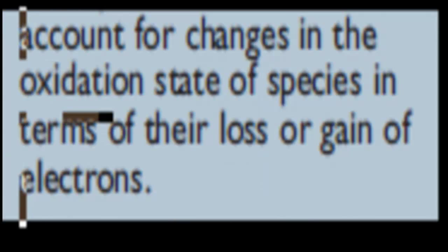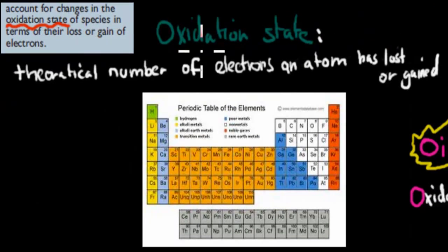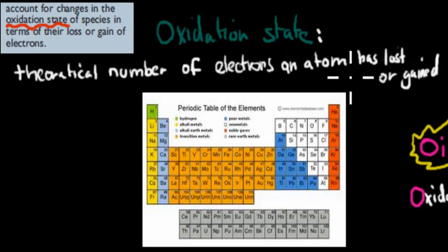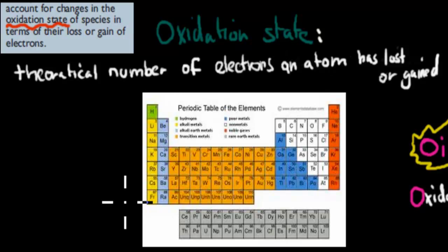Before we start, we definitely need to know what oxidation state means, because that's a new word. Oxidation state is the theoretical number of electrons an atom has lost or gained. So, we had zinc and we had copper. For example, copper 2+ means that copper has gained or lost two electrons, and zinc 2+ means that zinc has lost two electrons.